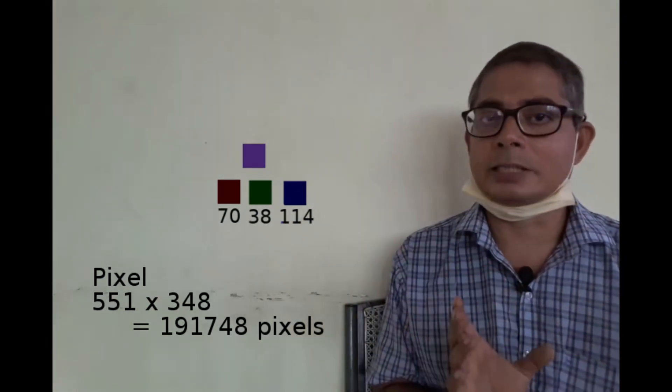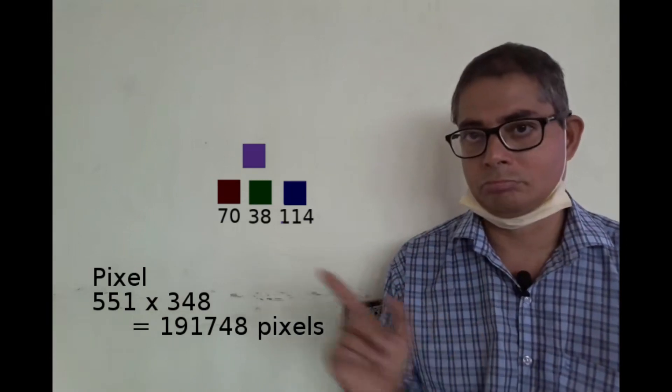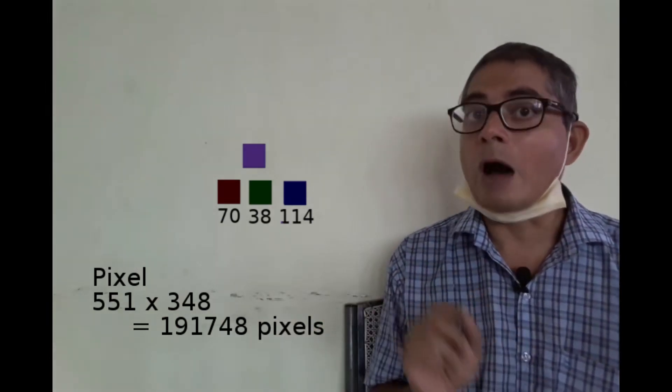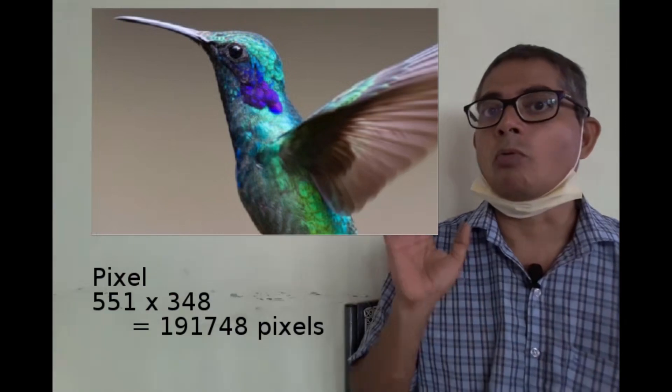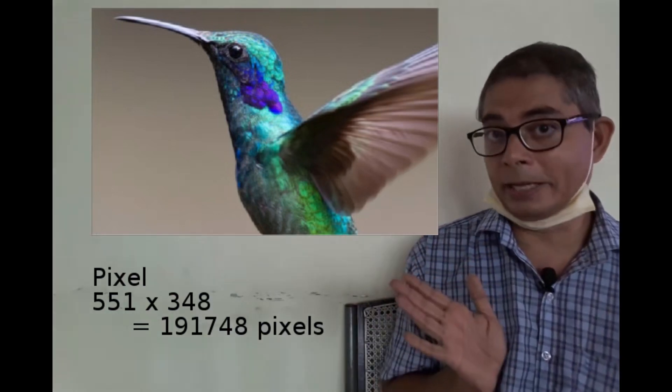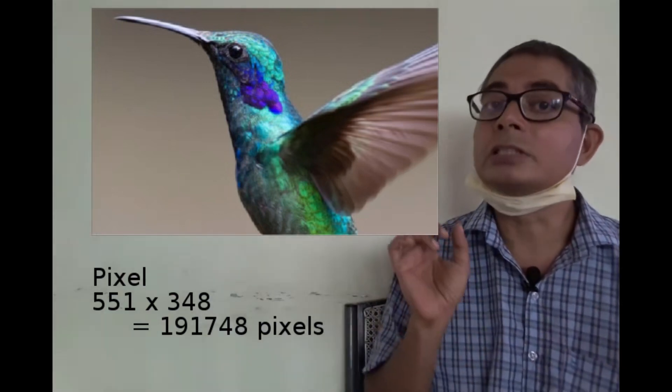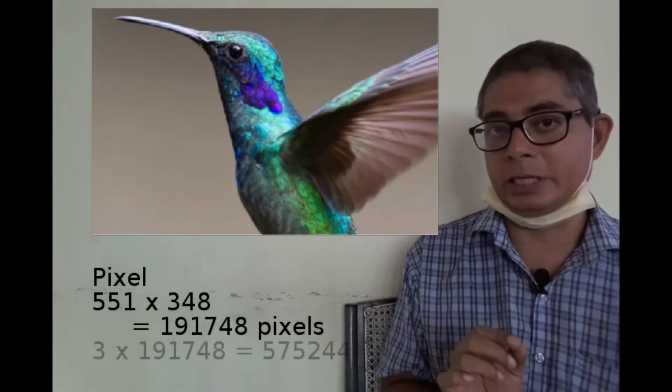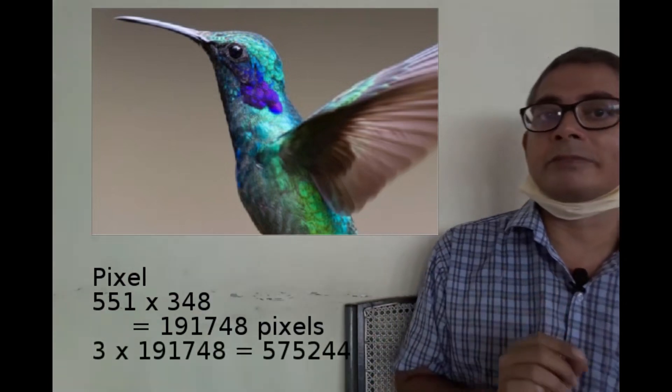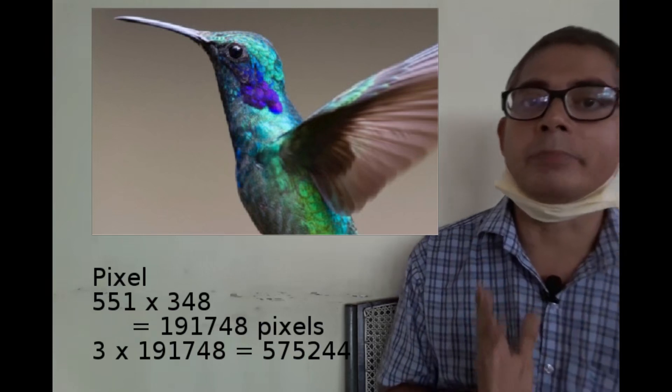Thus each pixel means three numbers. So our original image, which had 191,748 pixels, consists of this times three - that is, 575,244 many numbers.